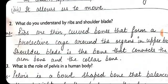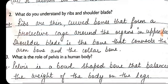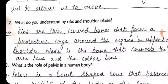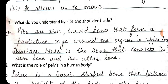The next question is: what do you understand by ribs and shoulder blades? Ribs are the thin curved bones which are connected to the sternum from the front and to the backbone (vertebral column) at the back. Ribs are thin curved bones that form a protective cage around the organs in the upper body, protecting the lungs, heart, and other vital internal organs.